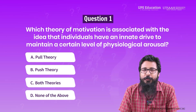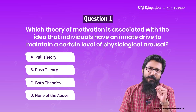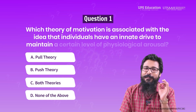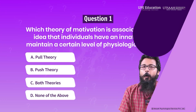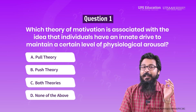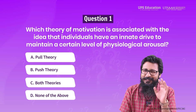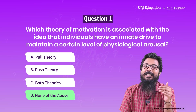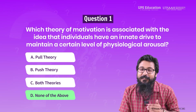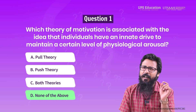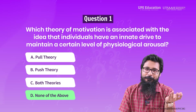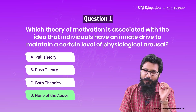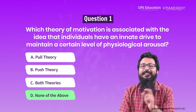In the beginning, I presented a few questions. Let's see them again. Question 1: Which theory of motivation is associated with the idea that individuals have an innate drive to maintain a certain level of physiological arousal? In both push and pull theories, we are trying to get something or avoid something. We are not trying to maintain physiological arousal. There is a theory called arousal motivation theory, which indicates that people act in a way to maintain their optimal level of physiological arousal. So arousal theory is the right answer, and since it is not listed as an option, the correct answer is D — none of the above.